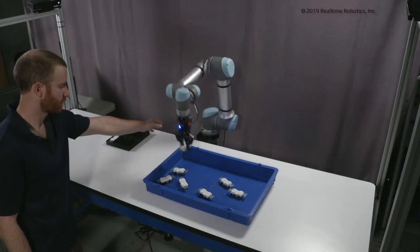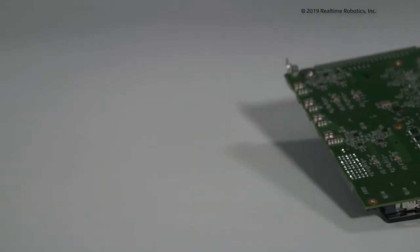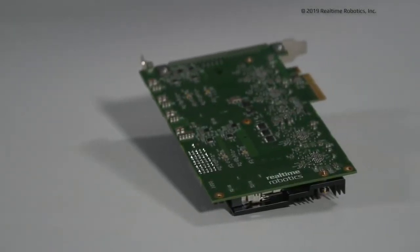RapidPlan is comprised of a configuration toolkit and a motion planning accelerator, MPA. The technology is robot and sensor agnostic.